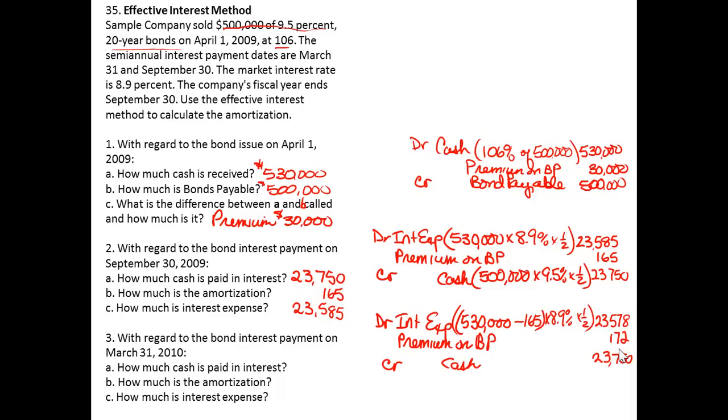So question three, how much cash is paid in interest? The same as we always do every six months: $23,750, and that's based on the bond's face times the bond's stated rate times half a year. How much is amortized? $172. And what is the interest expense? $23,578.